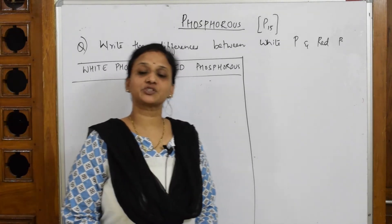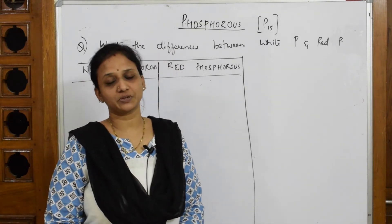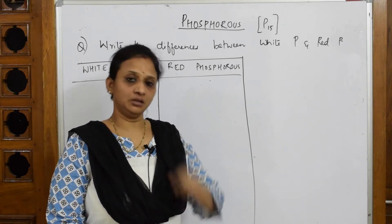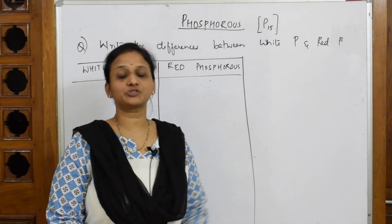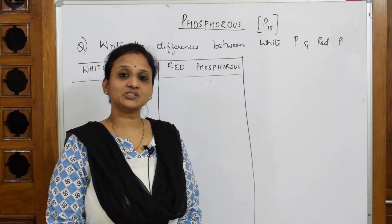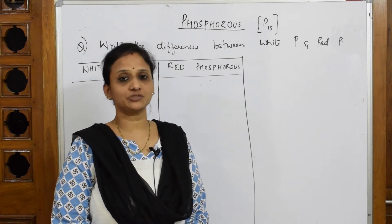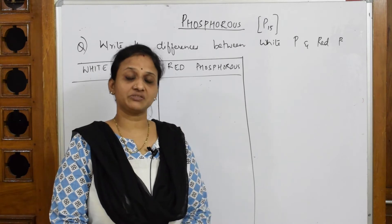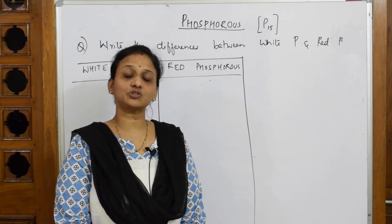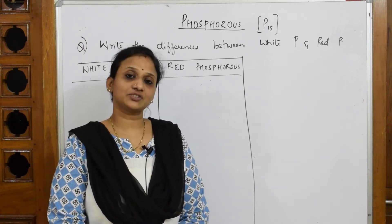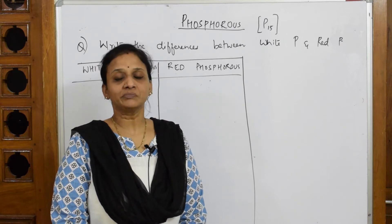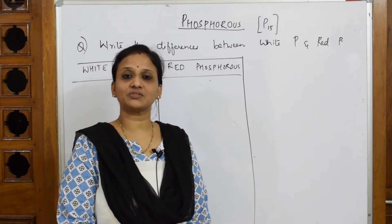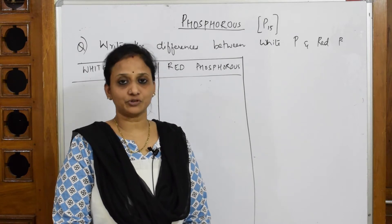Welcome back students to one more session of your P-Block chapter. We've already started with Group 15 where I taught you about nitrogen and its compounds, including ammonia. I've done reasoning equations based on ammonia and also taught you the reactions involving nitric acid, and we drew the structure of nitric acid. Now let's start with phosphorus.